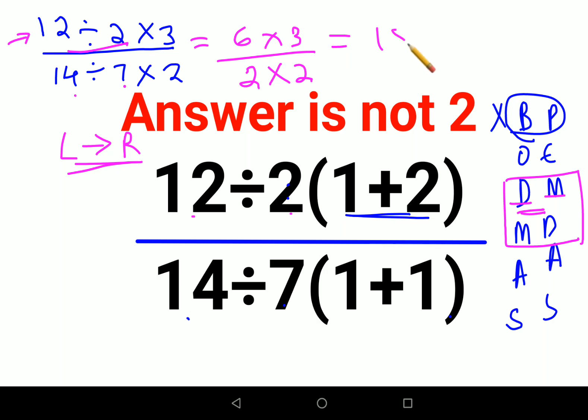So, here we get 18 upon 4, which comes out to be 9 upon 2. So, answer for this one is 4.5.